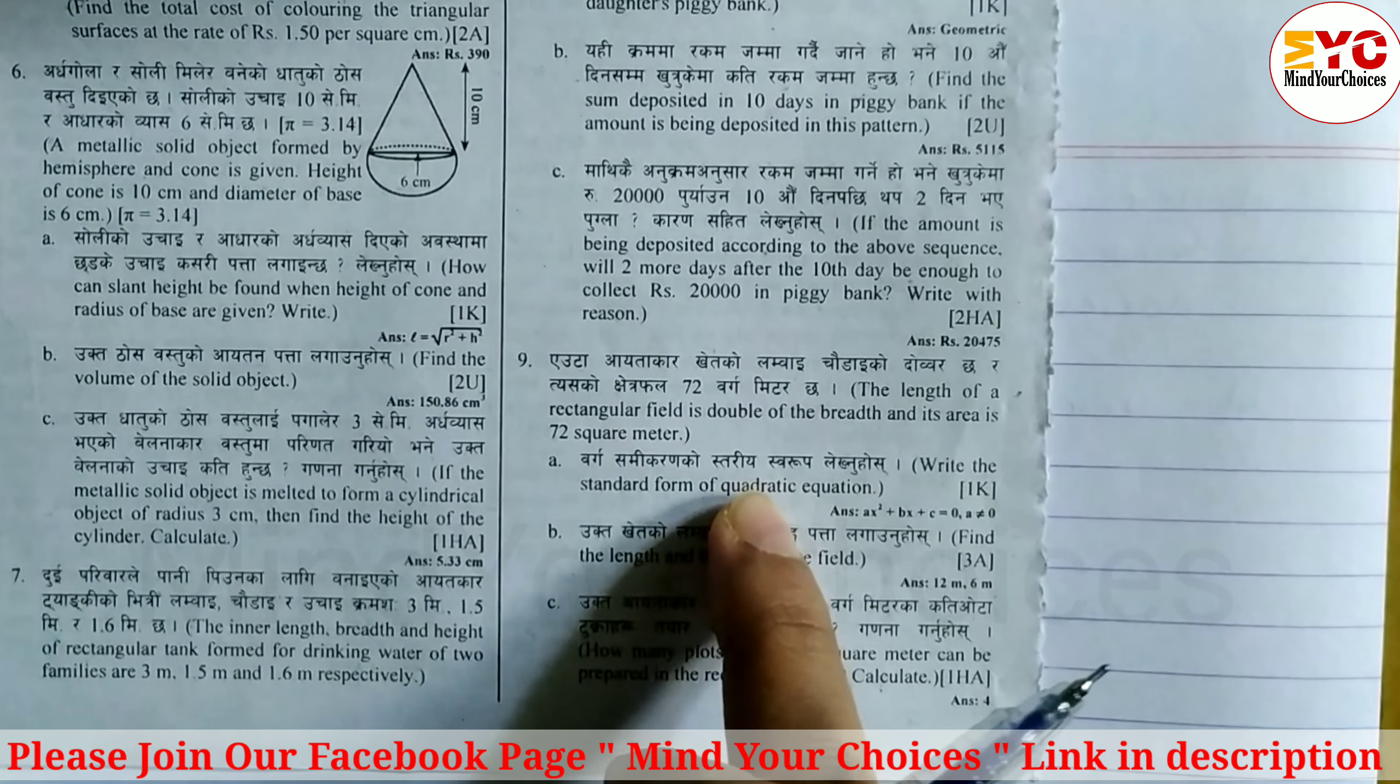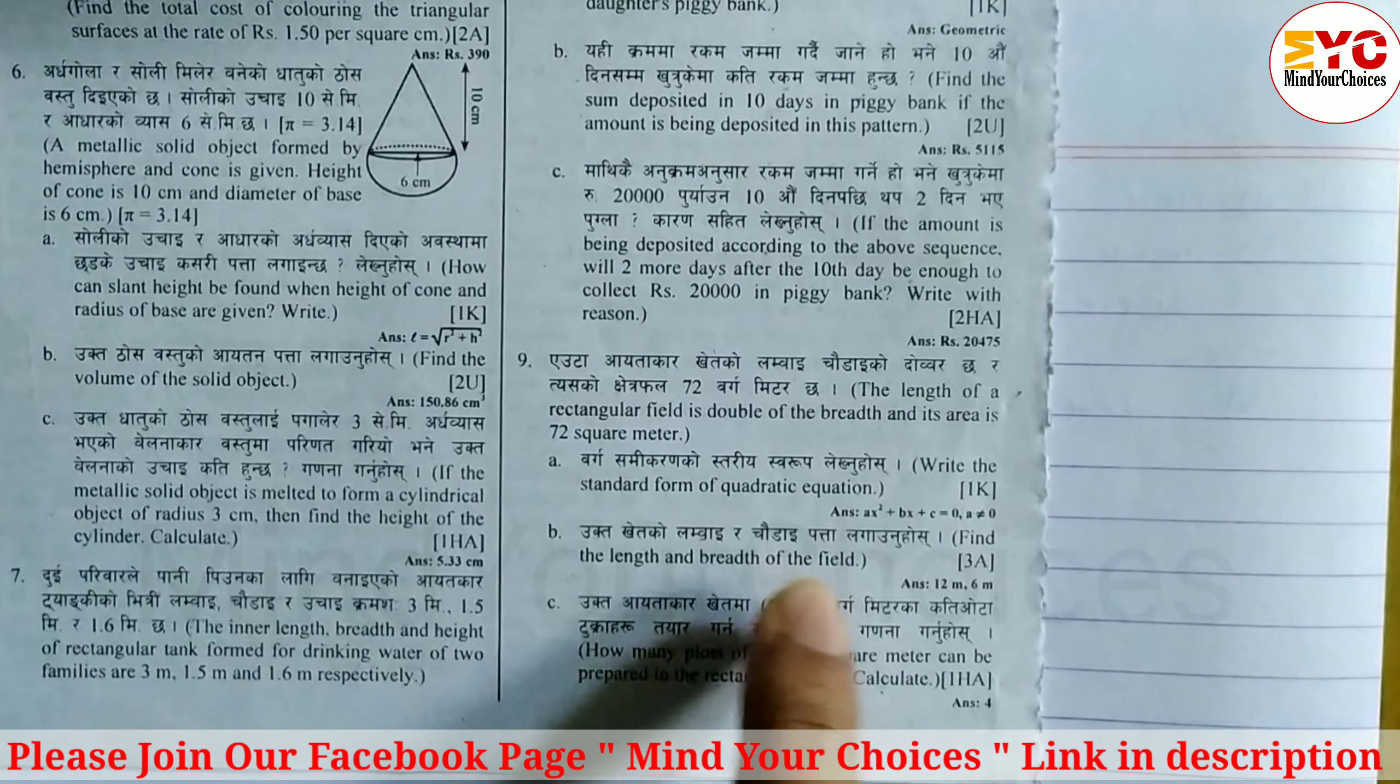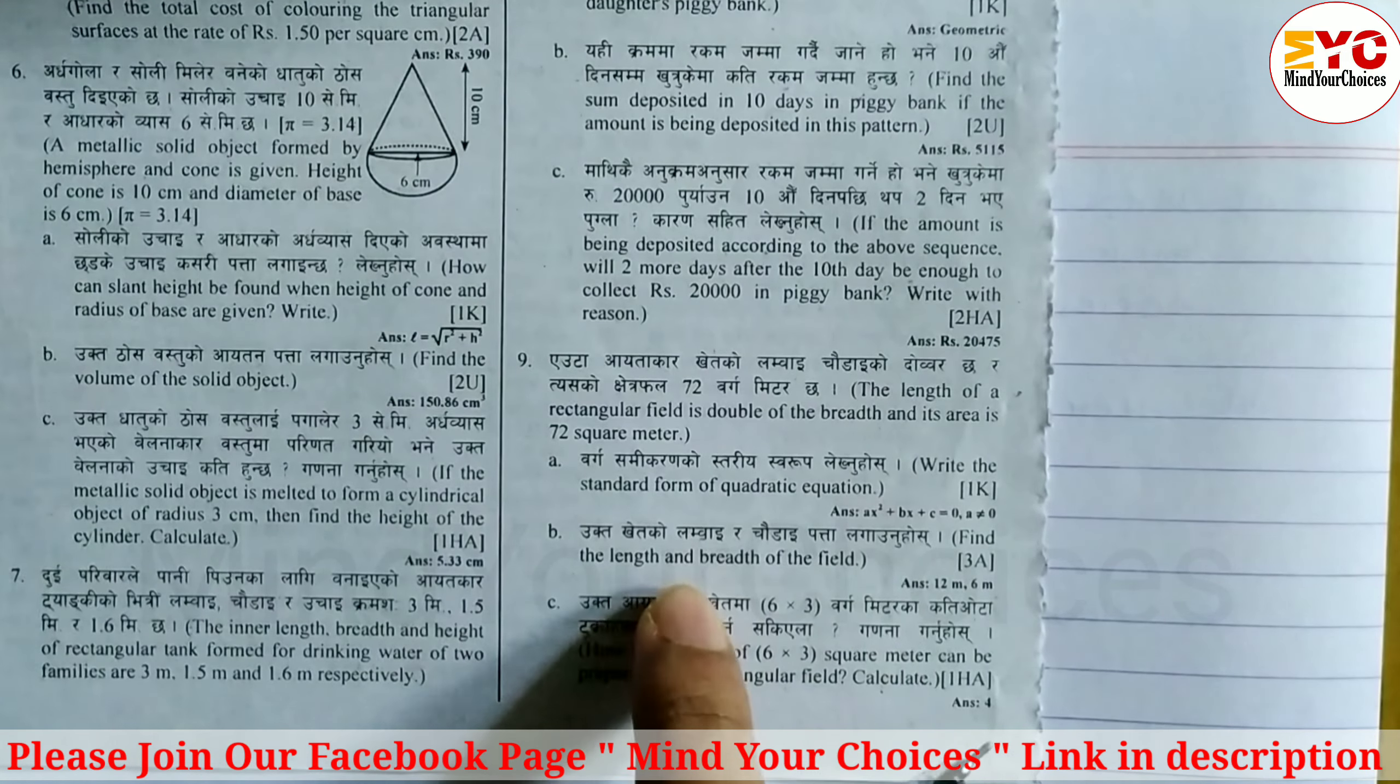Standard form Ax square plus bx plus c is equal to 0. After that number B: Find the length and breadth of field.